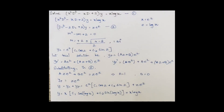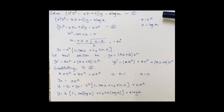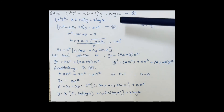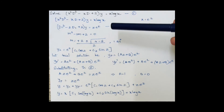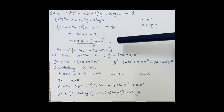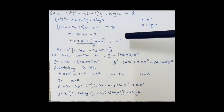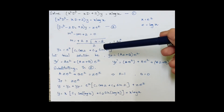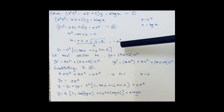Here's another example: solve (x²D² - xD + 2)·y = x·log x. Following the same procedure, substitute x = e^z and z = log x. The equation transforms to (D1² - 2D1 + 2)·y = z·e^z. The auxiliary equation is n² - 2n + 2 = 0, giving roots 1 ± i, which are imaginary. The complementary function is e^z·(c1·cos z + c2·sin z).